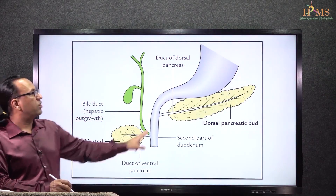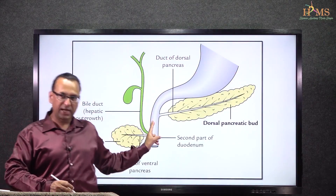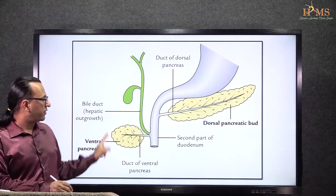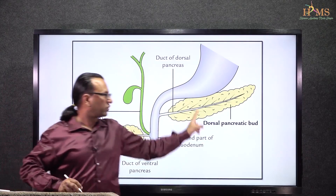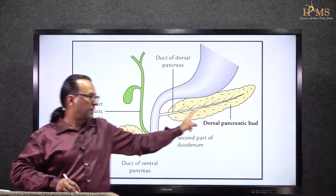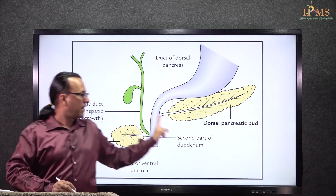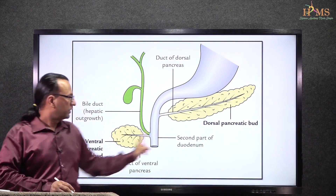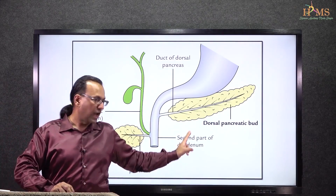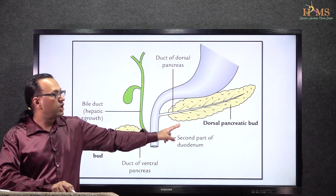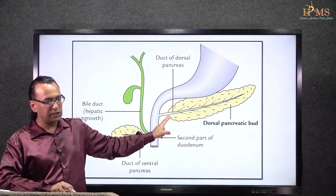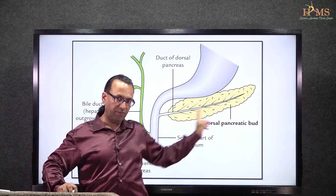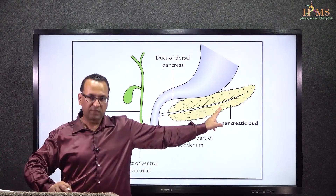The pancreas develops at the junction of the foregut and midgut in the second part of the duodenum. There is a ventral pancreatic bud and a dorsal pancreatic bud. Later, the ventral pancreatic bud moves around and fuses with the dorsal pancreatic bud, contributing to the uncinate process of the pancreas and part of the head. Most of the head, as well as the neck, body, and tail, come from the dorsal pancreatic bud.